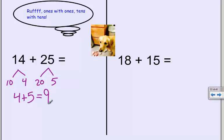And I'm going to add my tens together. One ten plus two tens equals three tens. And then my final step is to add my tens and my ones. I have three tens and nine ones. So my sum is 39.